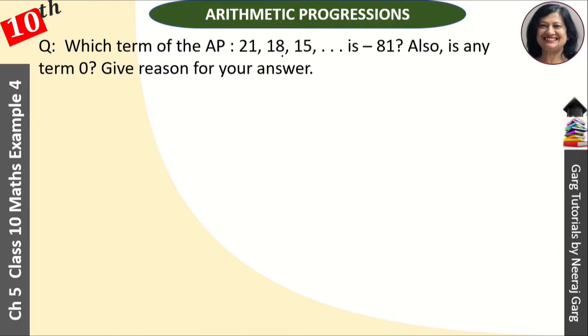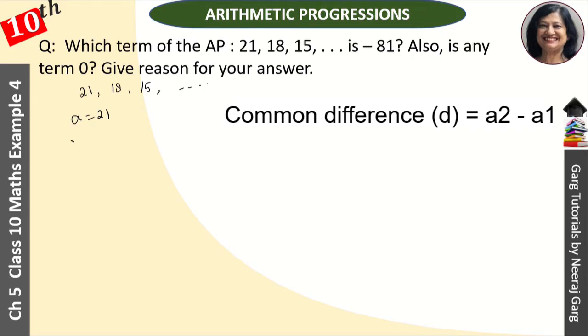We have the terms given: 21, 18, 15 and so on. So we write 21, 18, 15 and so on. A is 21. The common difference d is a2 minus a1. That is 18 minus 21 which equals minus 3. This is our d.